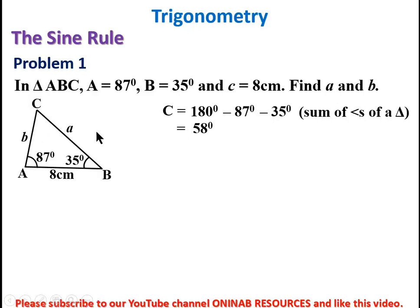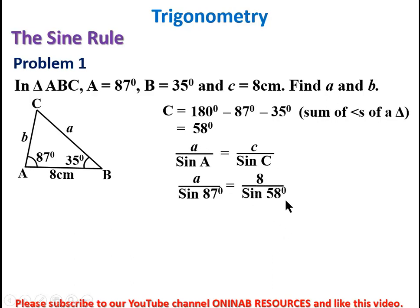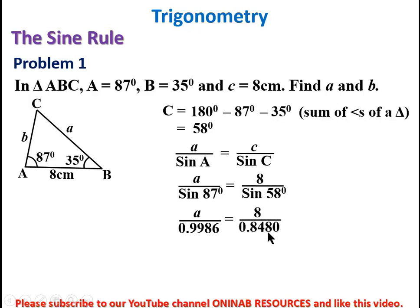We now find side a. Using a over sin A equals c over sin C, we substitute: a over sin 87° equals 8 over sin 58°. From the calculator, sin 87° is 0.9986 and sin 58° is 0.8480.